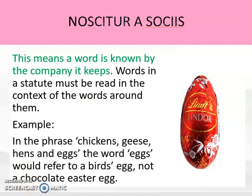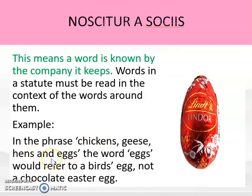For example, take the phrase 'chickens, geese, hens and eggs.' The word 'eggs' is a little ambiguous — it could mean an egg that a chicken has laid, or it could mean a chocolate Easter egg. But if we use Noscitur a Sociis and look at the other words — chickens, geese, hens — they're all poultry. So 'eggs' must relate to chicken, geese or hens' eggs, meaning a bird's egg, not a chocolate Easter egg.